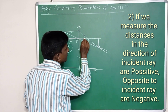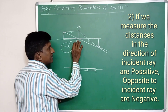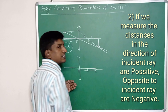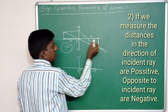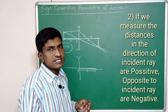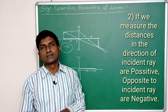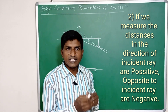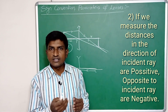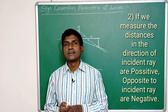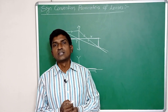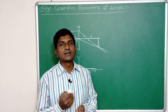Similarly, the distance of the image, denoted as v, is measured starting from the optical center. Since we are measuring in the direction of the incident light ray, the distance of the image is positive. This is the second sign convention: all distances measured in the direction of the incident light ray are positive, and distances measured opposite to the incident light ray are taken as negative.